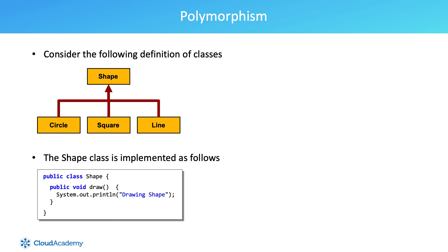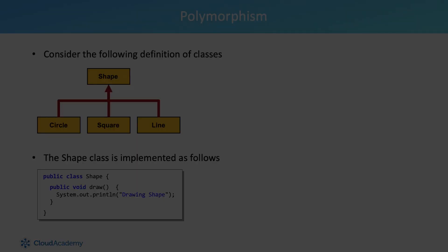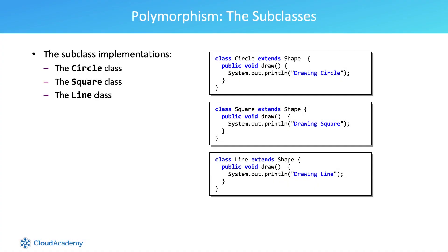It depends on the principle of substitutability, where a superclass object can hold a reference to itself or any of its subclasses. The following subclassing example has implementations for circle, square, and line. Notice that we have defined special versions of the draw method for each of our specialized shapes. The method has the same signature as that in the superclass. This is a key requirement for making polymorphism work.